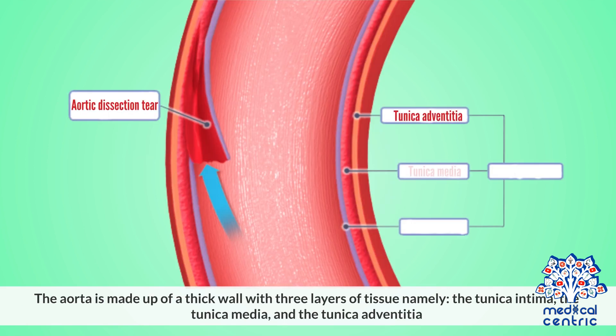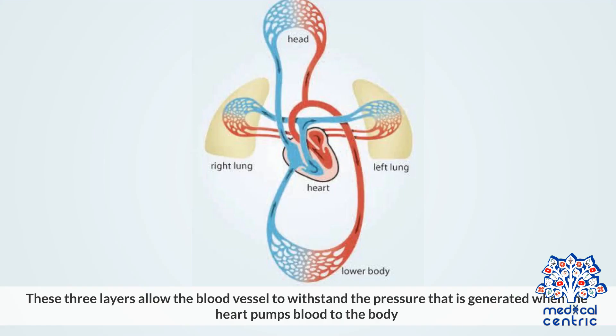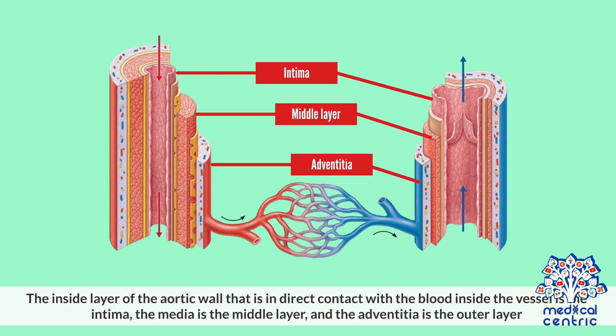The aorta is made up of a thick wall with three layers of tissue, namely the tunica intima, the tunica media, and the tunica adventitia. These three layers allow the blood vessel to withstand the pressure that is generated when the heart pumps blood to the body. The inside layer of the aortic wall in direct contact with the blood is the intima, the media is the middle layer, and the adventitia is the outer layer.